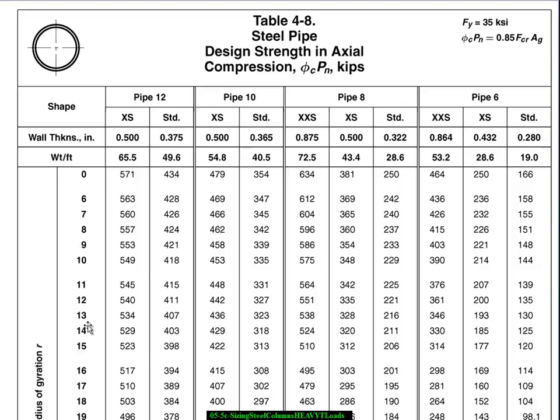Alright, so we are looking for a 14 foot long pipe column that will safely support 440 kips. So here we're towards the heavy end of the table.